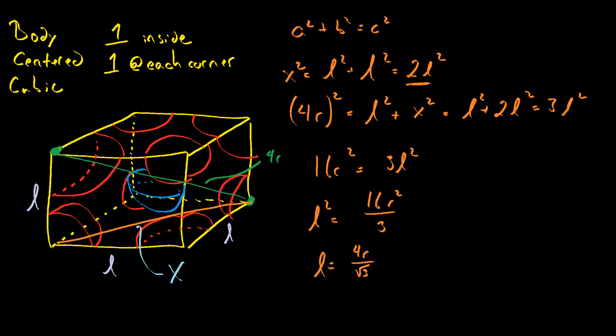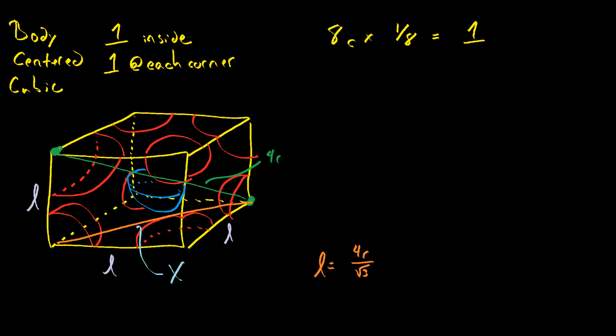Now we need to count our atoms. One atom inside, and one at each corner. Eight corners times one-eighth atom per corner gives us one atom. One atom inside times 100% is equal to one atom. One atom plus one atom is two atoms. So a body-centered cubic cell has two atoms inside of it.